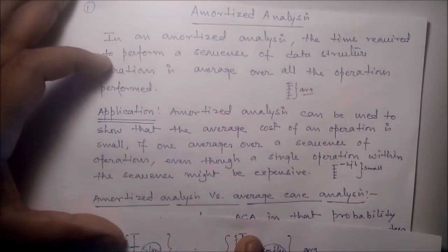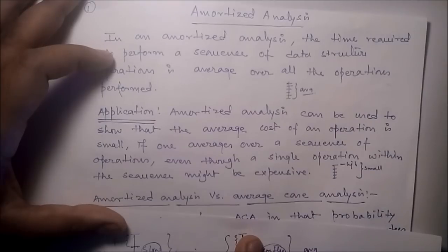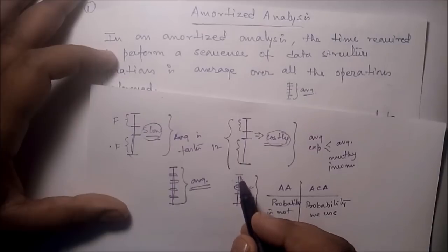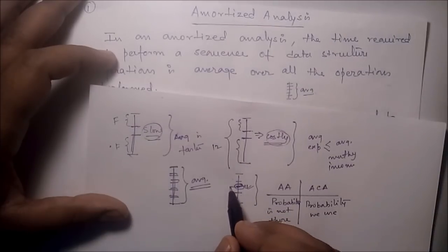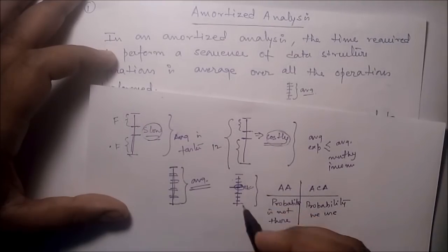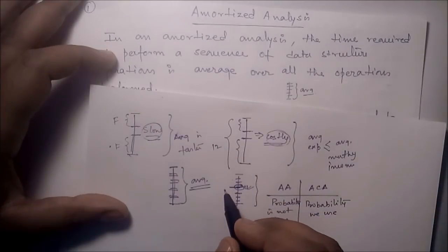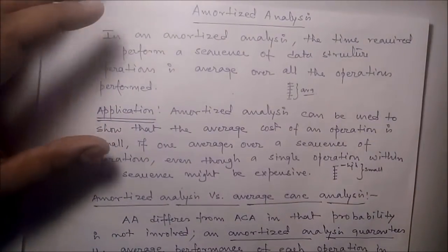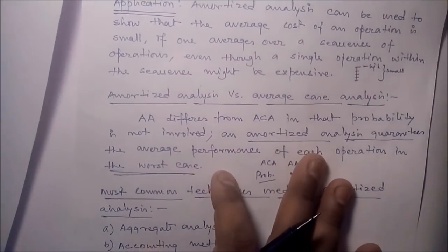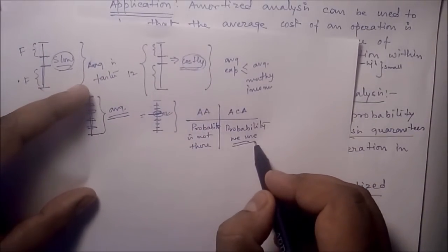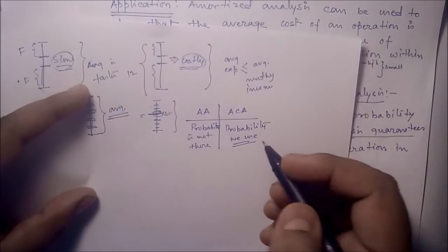Amortized analysis can be used to show that the average cost of an operation is small if averaged over a sequence of operations, even though a single operation within the sequence might be expensive. The key difference between amortized analysis and average-case analysis is that average-case analysis uses probability, but amortized analysis does not use probability.